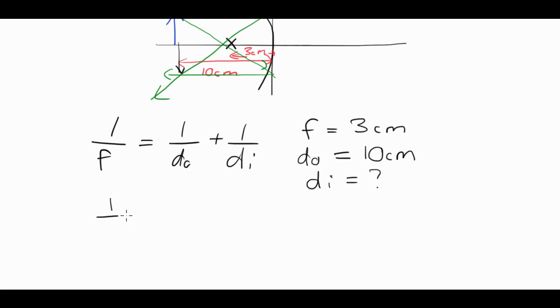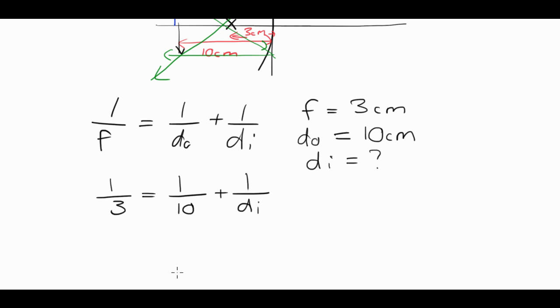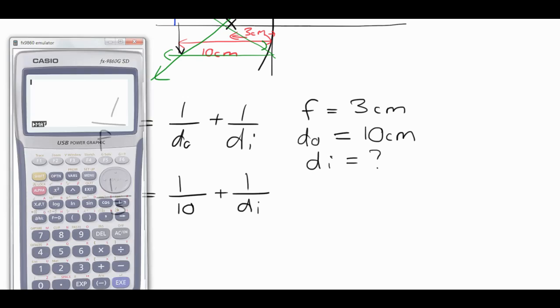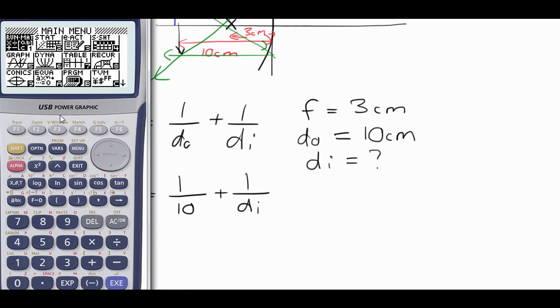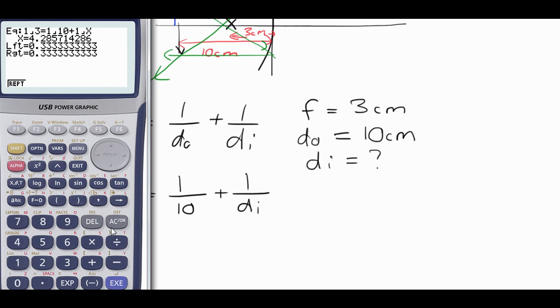All right, putting numbers in, means we have 1 divided by 3, is 1 over 10 plus 1 over di. Now probably the easiest way by far to solve this question is, if you don't like algebra, is to use solver in your calculator, so I'll quickly show you how to do that. So we go into the menu mode, we go to equation, and we're into solver. Okay, so in solver we have 1 over 3, and that is equal to 1 over 10 plus 1 over x. And hitting solve, we have an answer of 4.29.